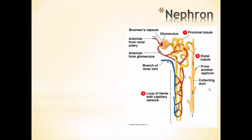A nephron is the functioning unit of a kidney. It consists of first the Bowman's capsule, or glomerular capsule, which we can see here in yellow. The glomerulus is the capillaries I mentioned previously, and the Bowman's capsule surrounds that glomerulus — and that's going to be the site of filtration.